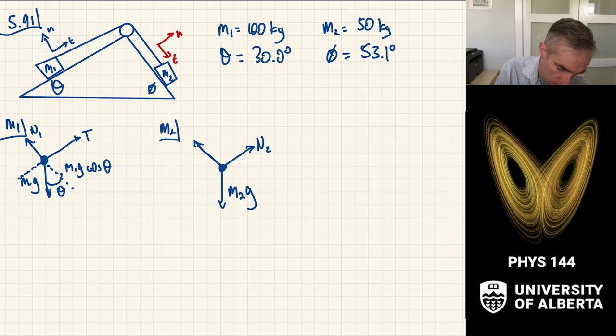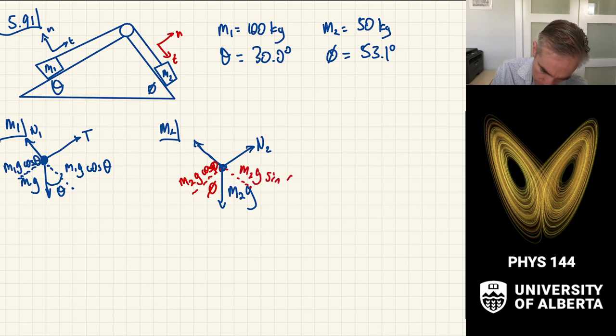And then coming down this direction is going to be a component M1g sin theta. Similarly, over here, we're going to have a coordinate system here that we can decompose, and in this coordinate system over here, this has the angle of phi. And so in this case, I have the component along here is M2g cos phi, and the component down the ramp is M2g sin phi.